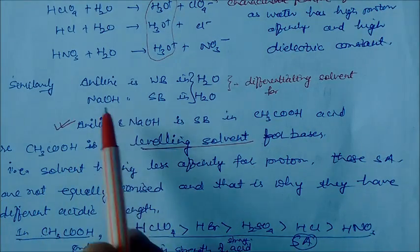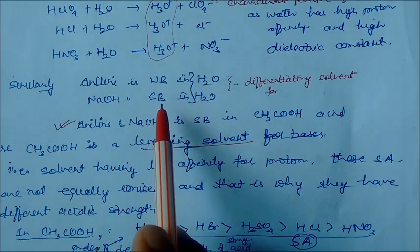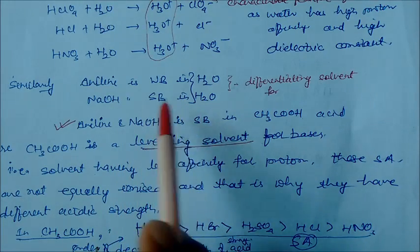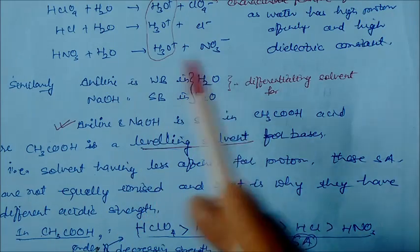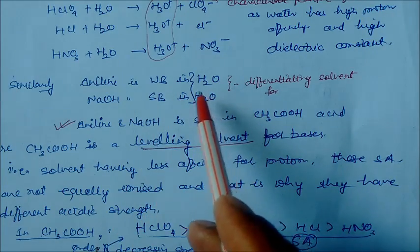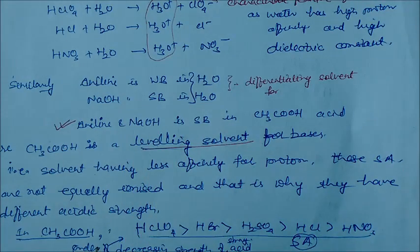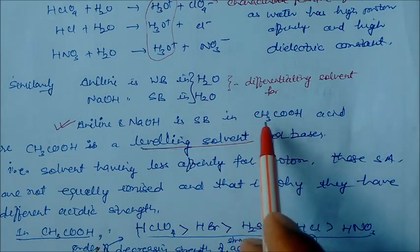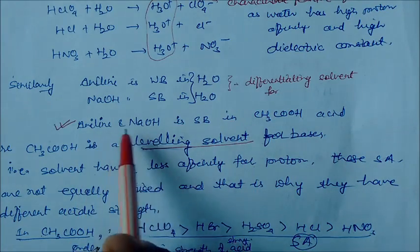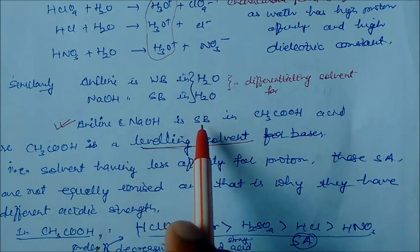Similarly, aniline is a weak base in water and sodium hydroxide is a strong base in water. This is called the differentiating effect — water is acting as a differentiating solvent for these two bases. So water differentiates aniline and sodium hydroxide as weak base and strong base respectively. But aniline and sodium hydroxide are both strong bases in acetic acid.